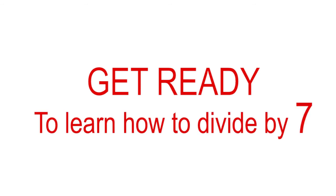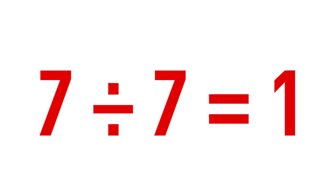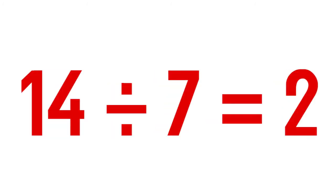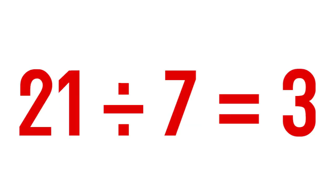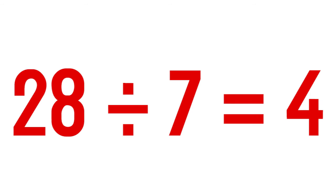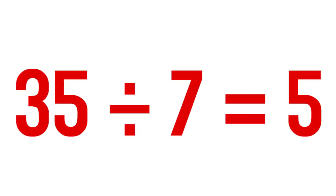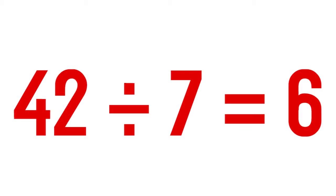Get ready to learn how to divide by 7. 7 divided by 7 equals 1. 14 divided by 7 equals 2. 21 divided by 7 equals 3. 28 divided by 7 equals 4. 35 divided by 7 equals 5. 42 divided by 7 equals 6.